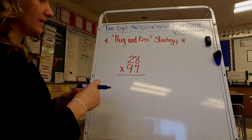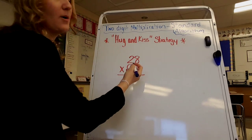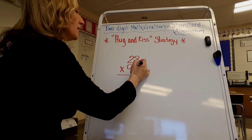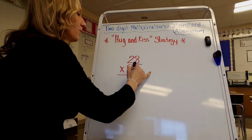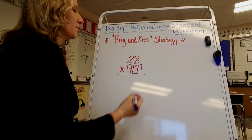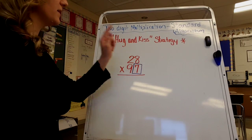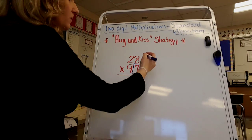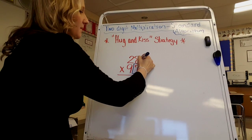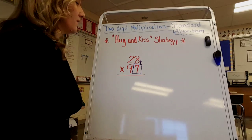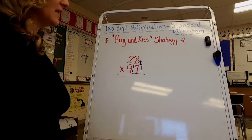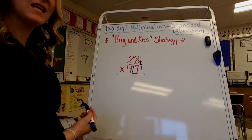So let me show you how to start. We always start in the ones place. We start with the bottom number and multiply the number in the ones place by the number in the ones place on the top. So 7 times 8 is 56.